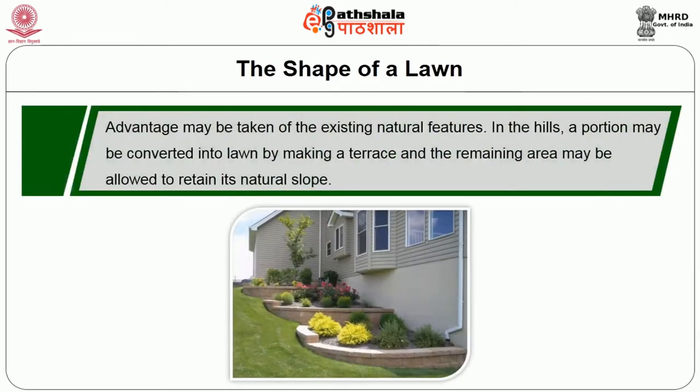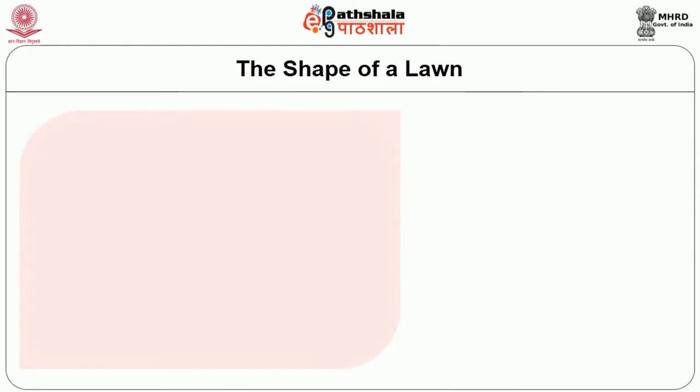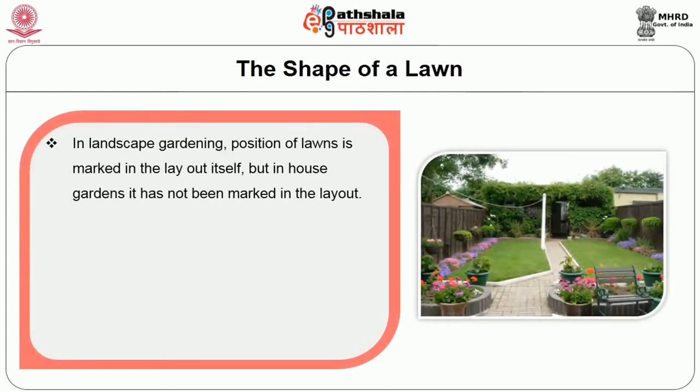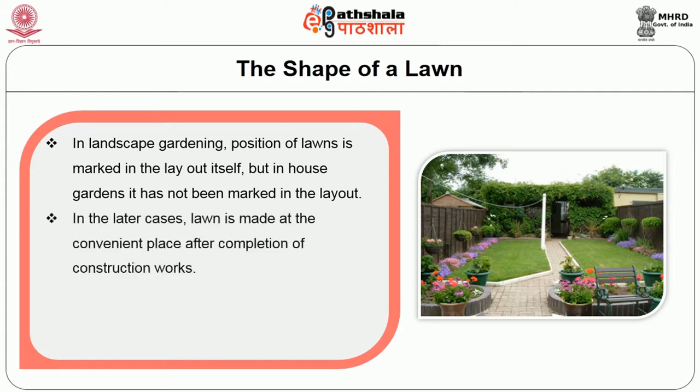Advantages may be taken of existing natural features. In the hills, a portion may be converted into lawn by making a terrace and the remaining area may be allowed to retain its natural slope. In landscape gardening, the position of lawn is marked in the layout itself, but in a house garden it has not been marked in the layout. In the latter cases, lawn is made at convenient places after completion of construction works.